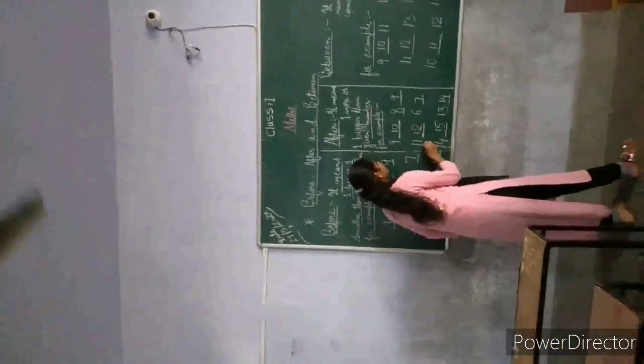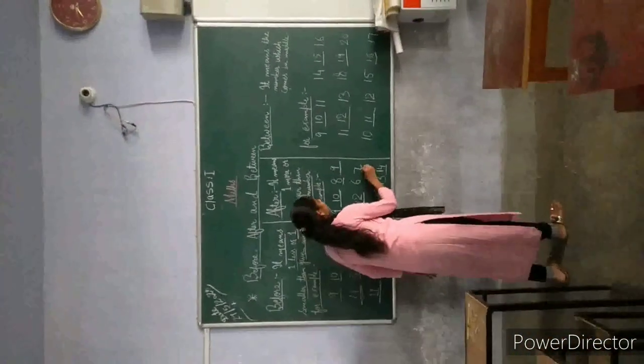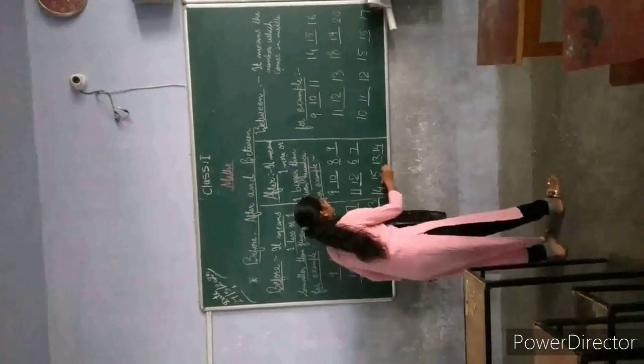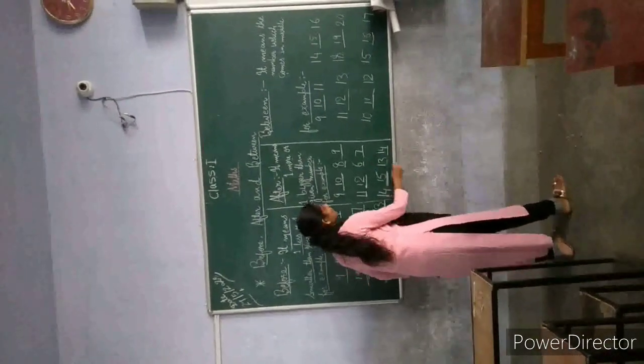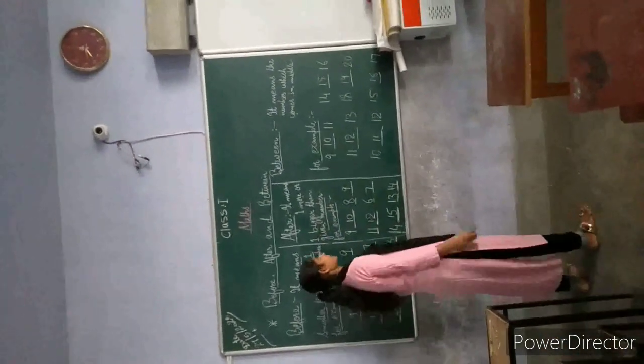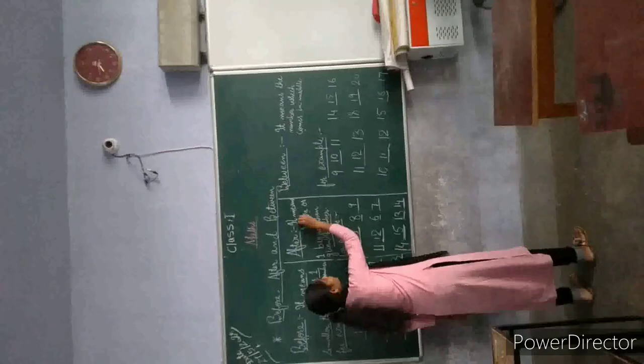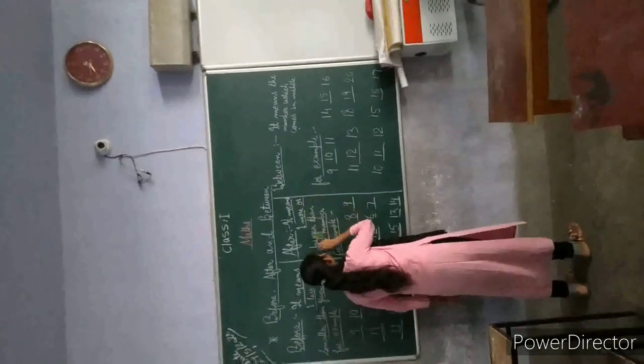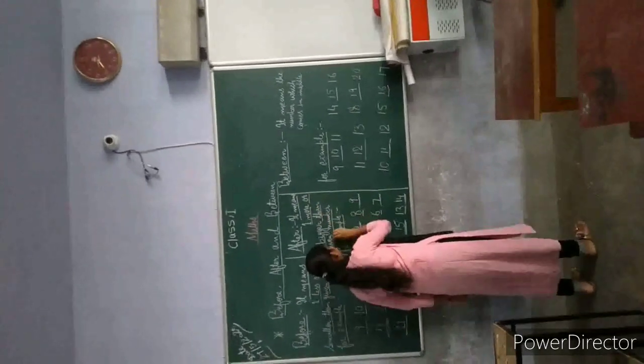12 comes after 11, 7 comes after 6, 13 comes after 14, 14 comes after 30. So, the number which means one more or one bigger than the number.